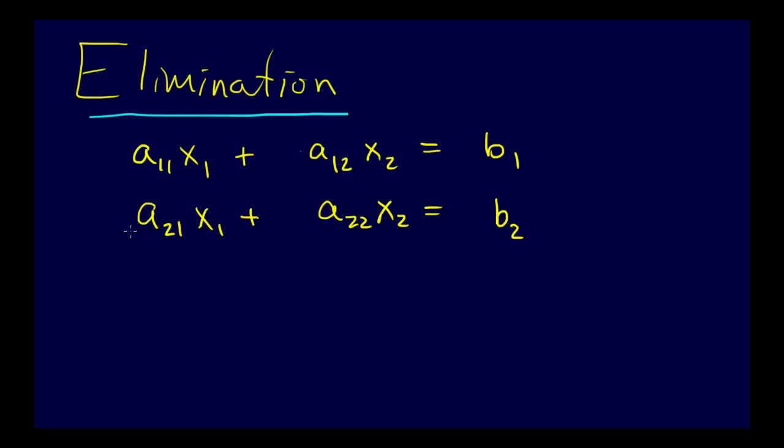One of the ways to do that is get the coefficients on x1 to be the same. I'm going to multiply this first equation by negative a21, and multiply this one by positive a11. Then we'll have opposite signs, and that'll work out.